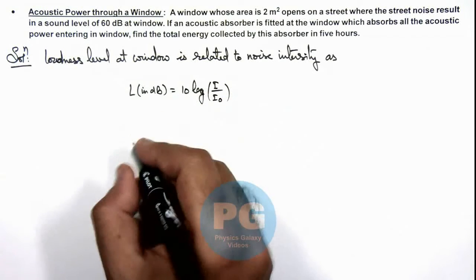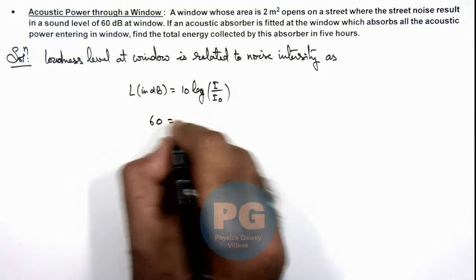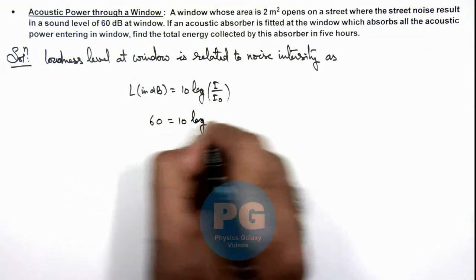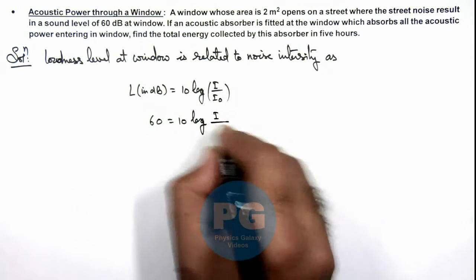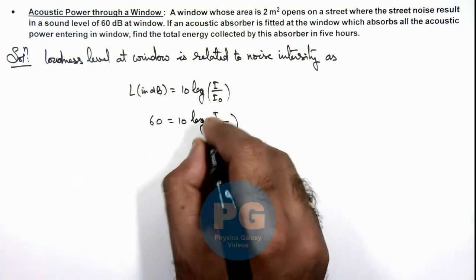Here the sound decibel we are given as 60 dB which is 10 log of I by I not, we know it is 10 to power minus 12 watt per meter square.